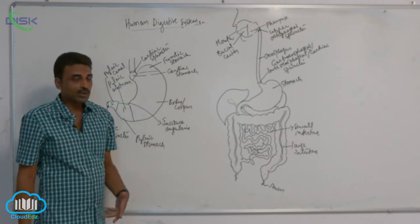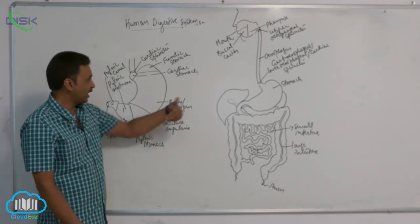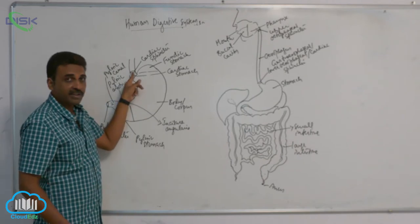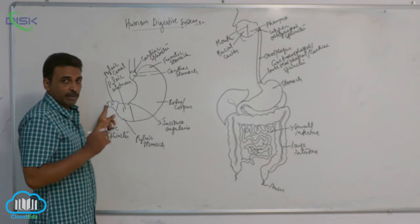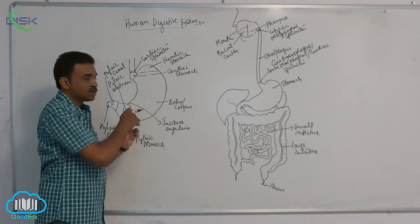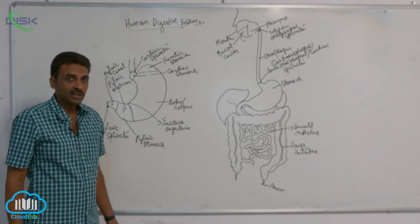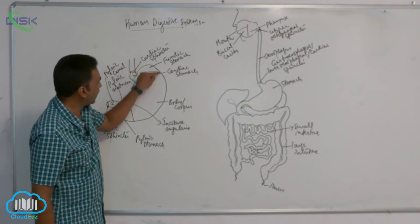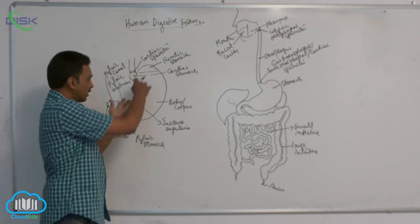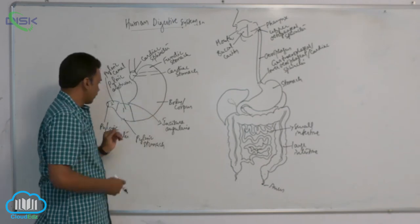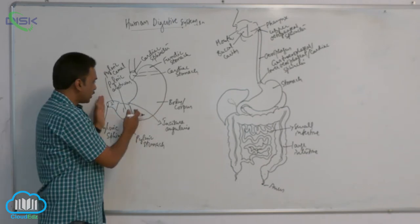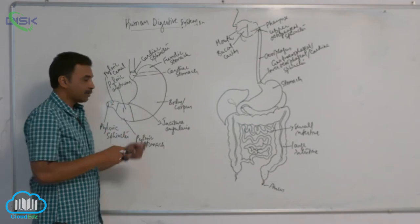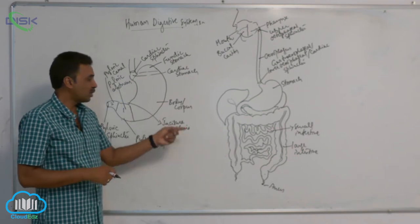To summarize the structure of the stomach: the greater curvature is on the left side, the lesser curvature is on the right side. The opening called the cardia is guarded by the cardiac sphincter, and the opening called the pylorus is guarded by the pyloric sphincter. In between these two areas is the stomach, comprising the cardiac stomach, fundic stomach, body of the stomach, and pyloric stomach. The pyloric stomach is divided into the pyloric antrum and pyloric canal, separated from the body by the incisura angularis.